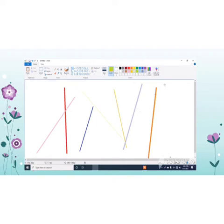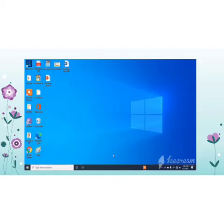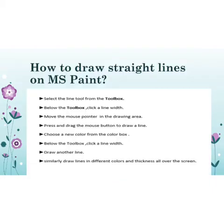By using straight lines you may draw angles of 45 degrees or 90 degrees. Now we will review the steps to draw straight lines in MS Paint: select the Line tool from the toolbox, then below the toolbox click the line width, move the mouse pointer in the drawing area, then press and drag the mouse button to draw a line.